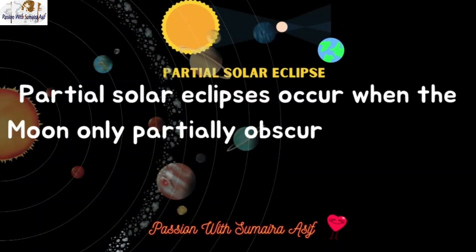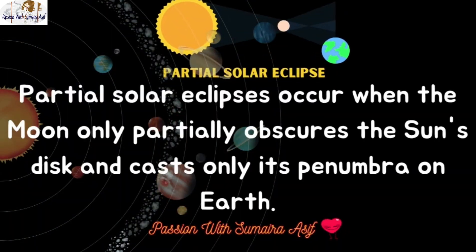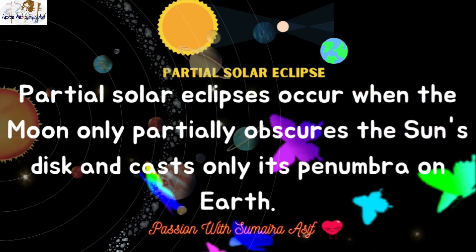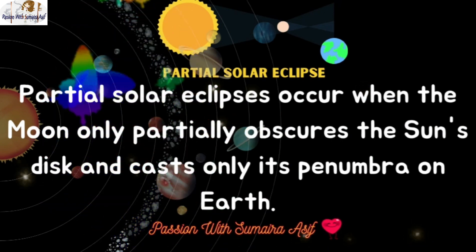A partial solar eclipse occurs when the moon only partially obscures the sun's disk and casts only its penumbra on earth.